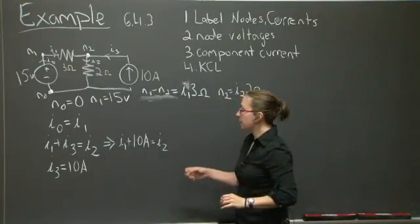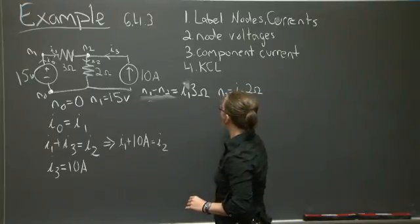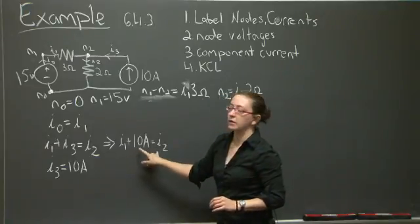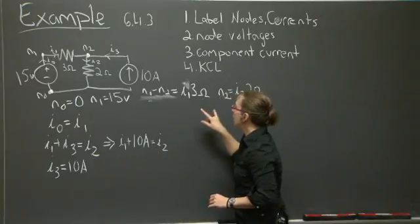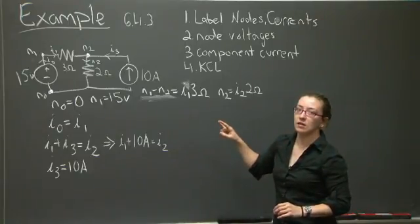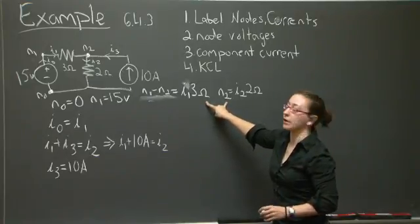I3 is equal to 10 amperes. So we can go ahead and make that substitution. I still have to work with I1 and I2, though. And I can go after expressions for them in terms of my node voltages and components by using the equations for voltage drop I made earlier.